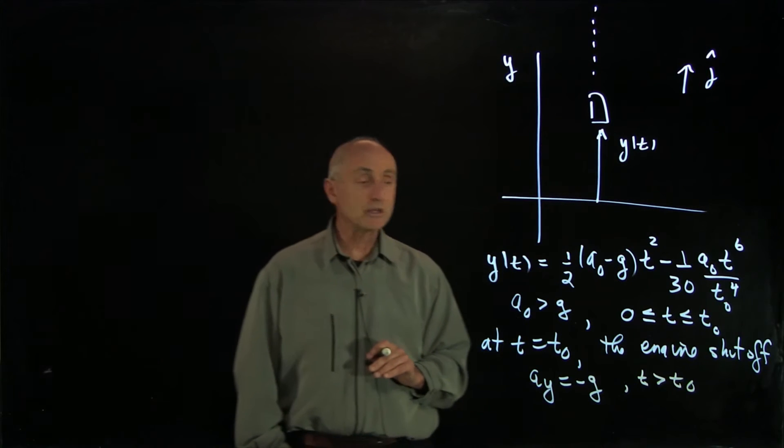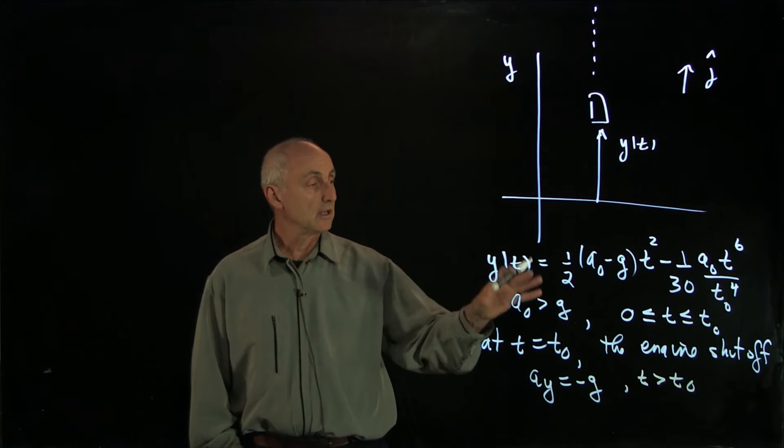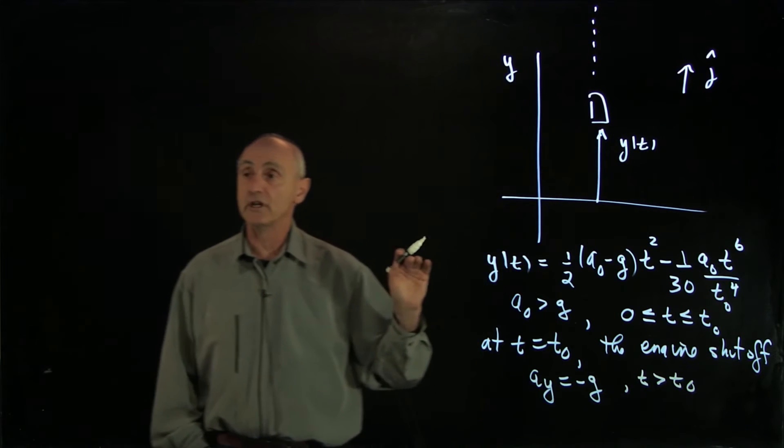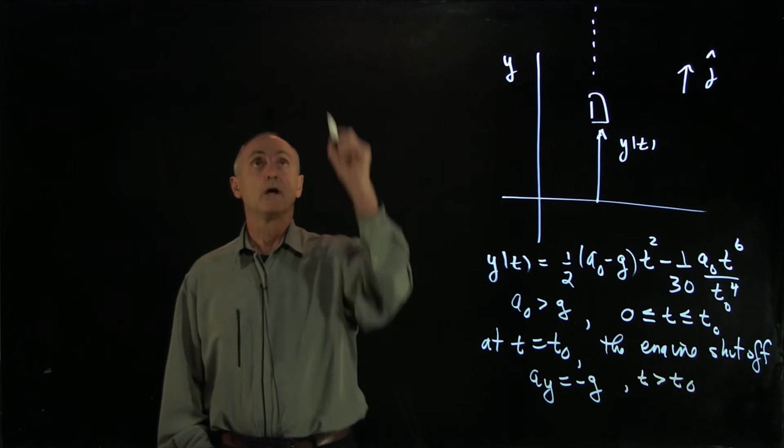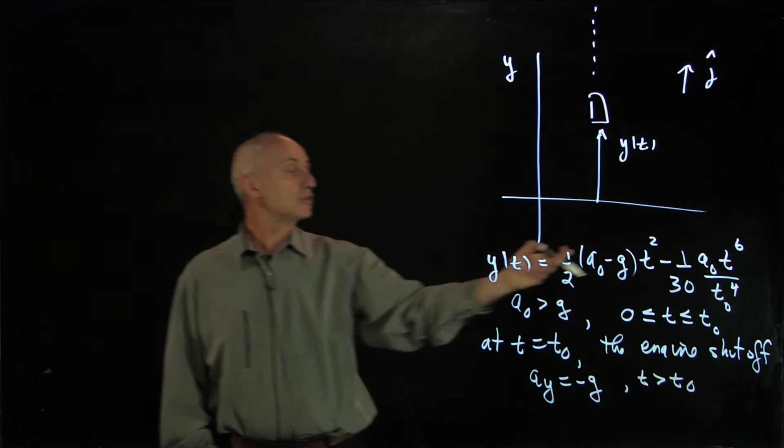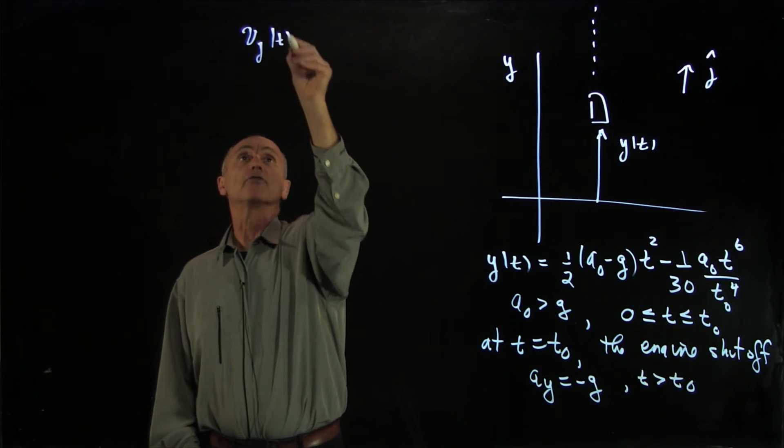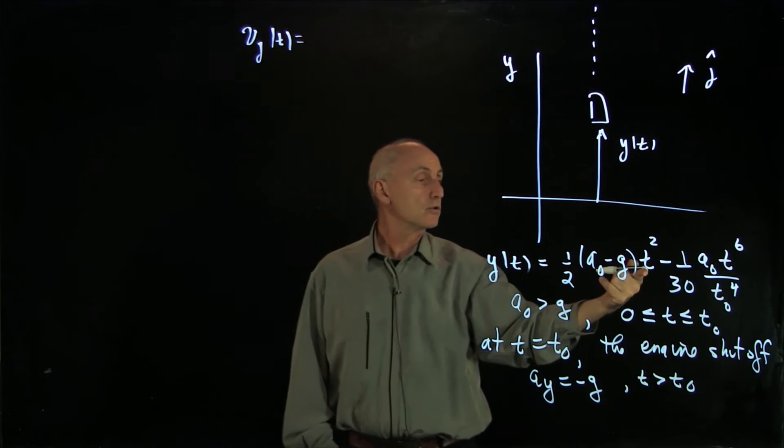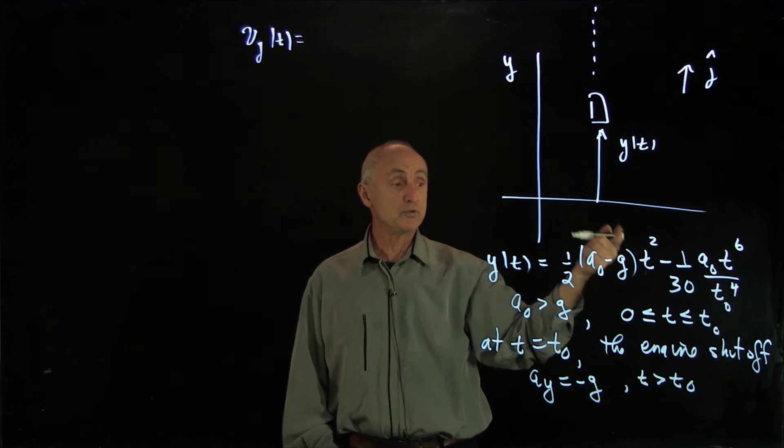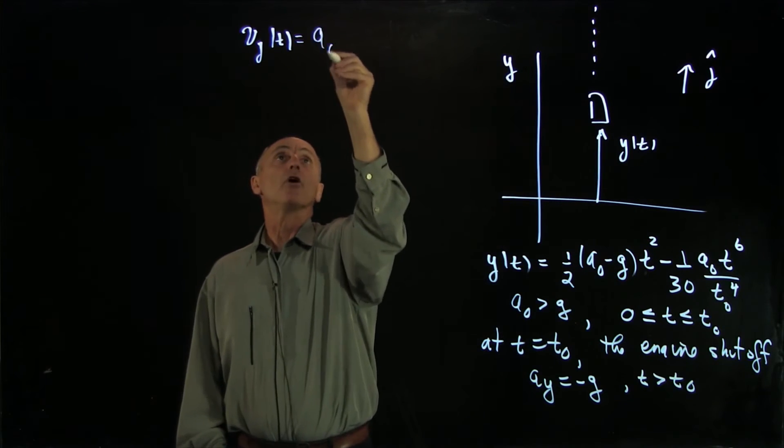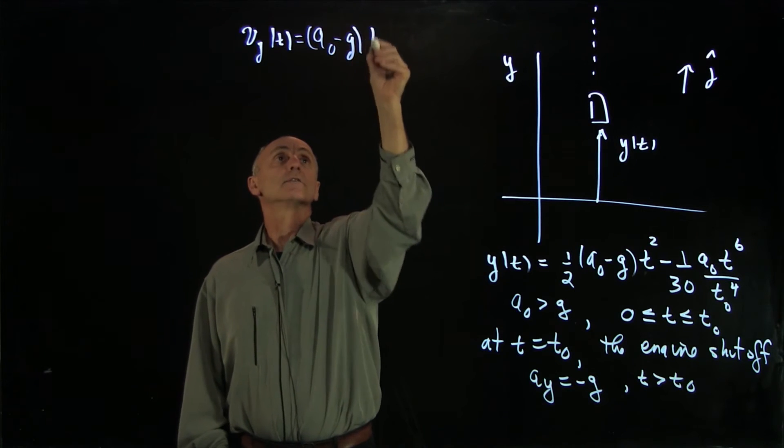Now let's calculate the velocity and the acceleration as functions of time. For the velocity, we're going to use the polynomial rule. The y component of the velocity is just the derivative of t squared, which is 2t. So we get (a0 minus g) times t.